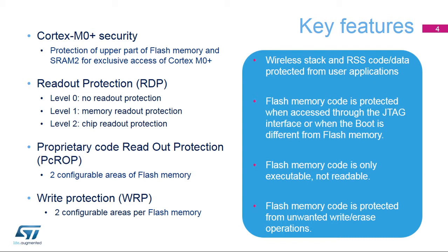RDP, readout protection, prevents flash memory access through the JTAG for all flash memory areas. PC-ROP, proprietary code readout protection, prevents read access of configurable flash memory areas performed by the CPU executing malicious third-party code, or Trojan horse. WRP, write protection, prevents accidental or malicious write-erase operations.